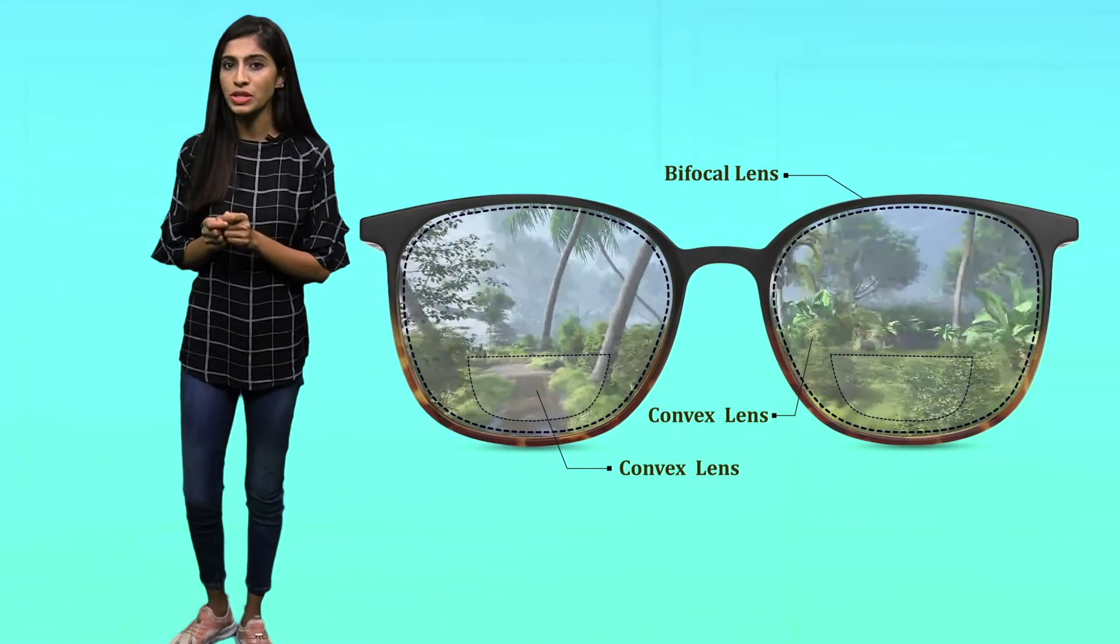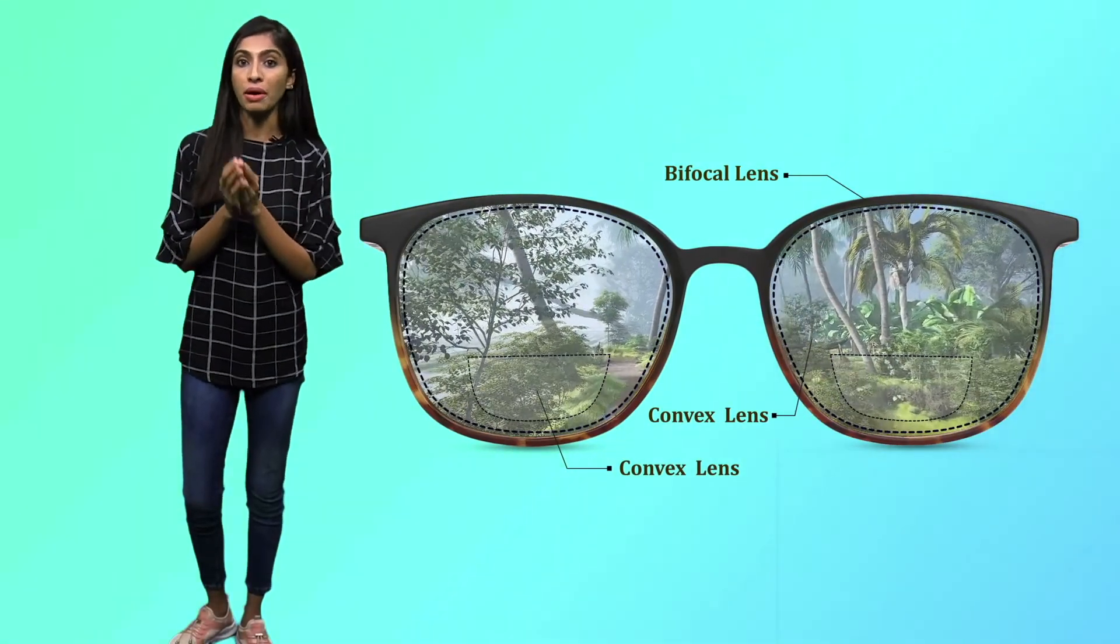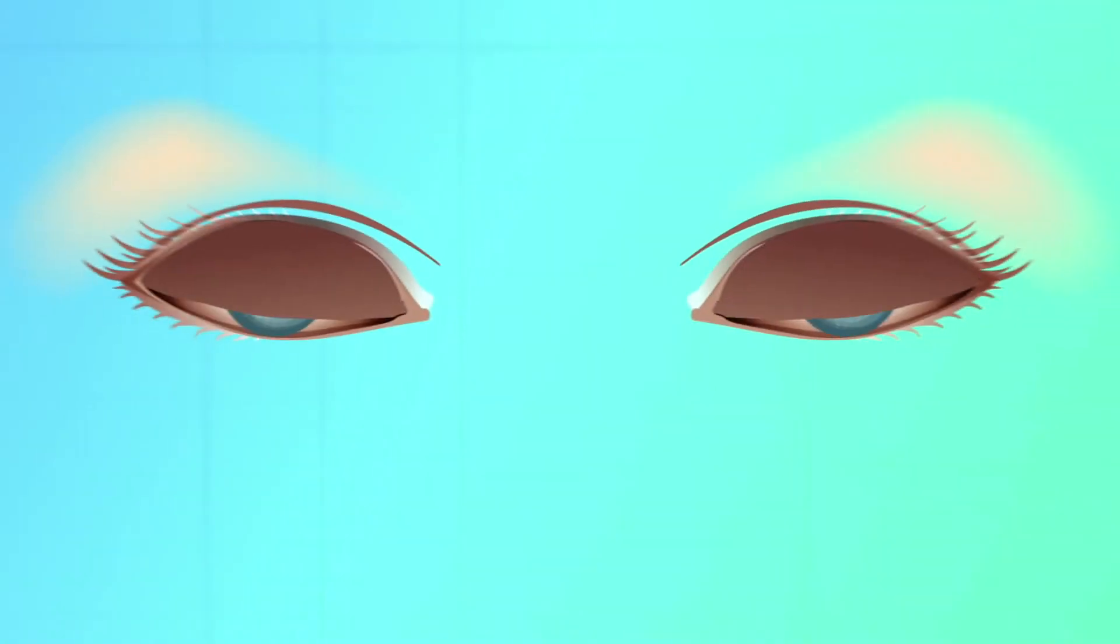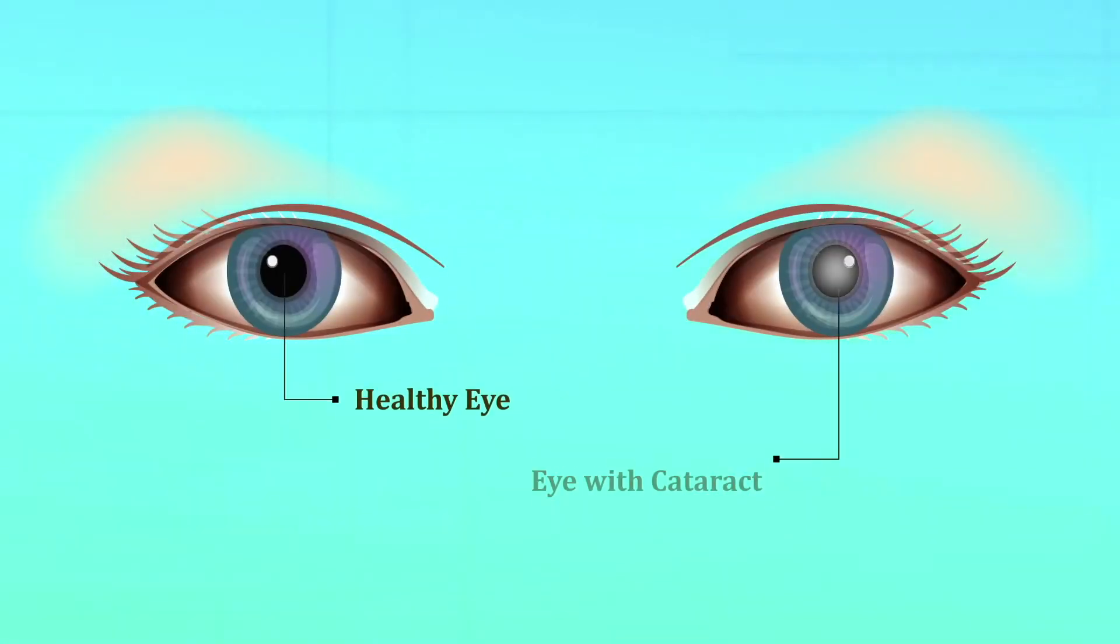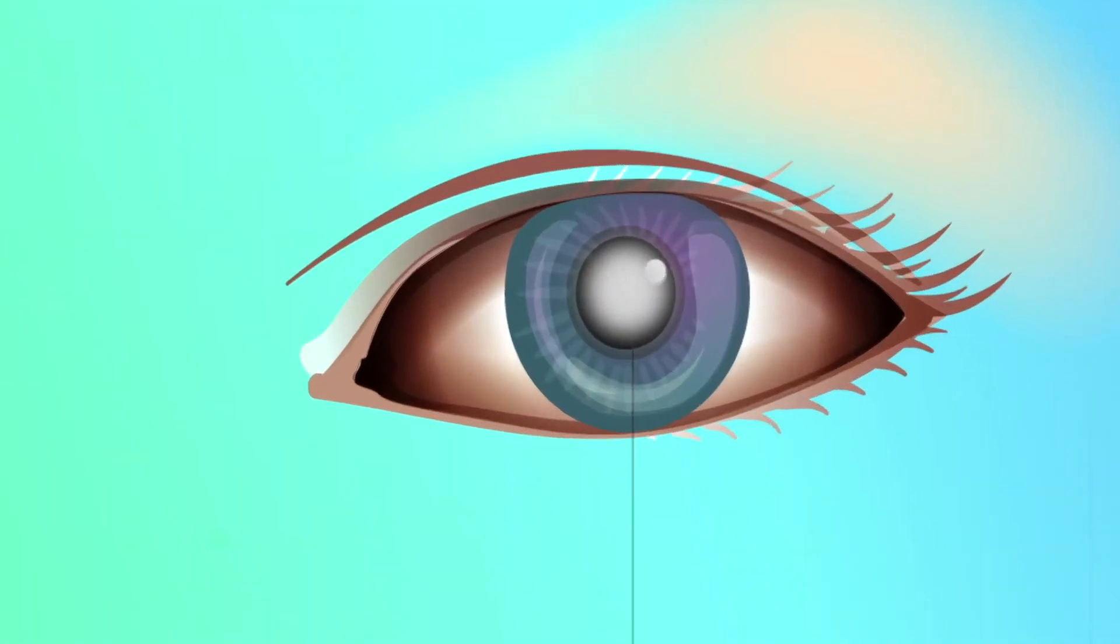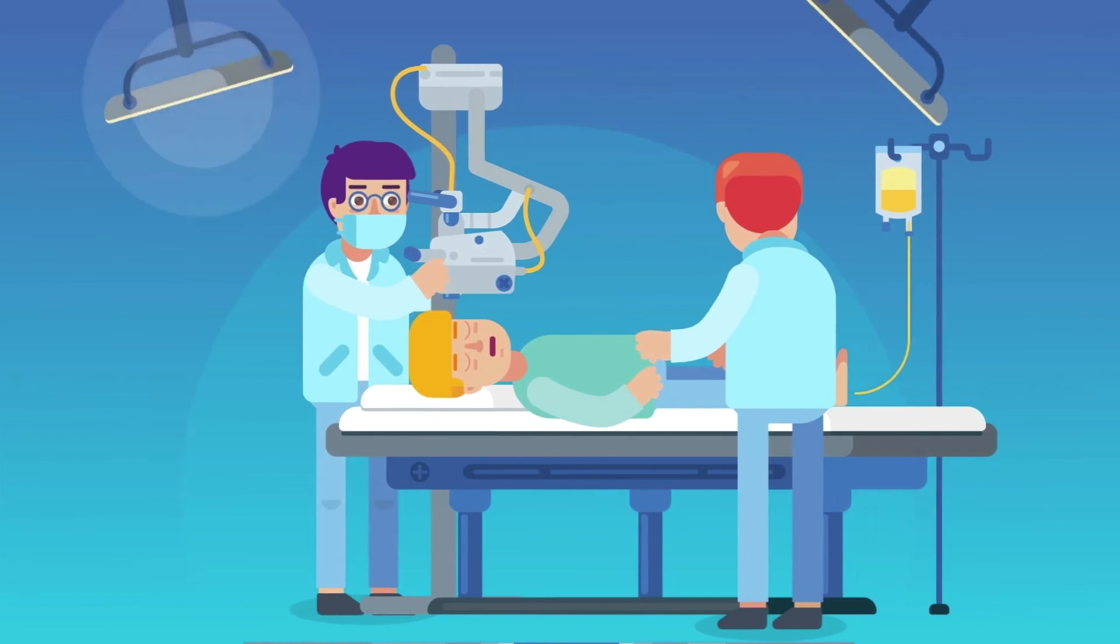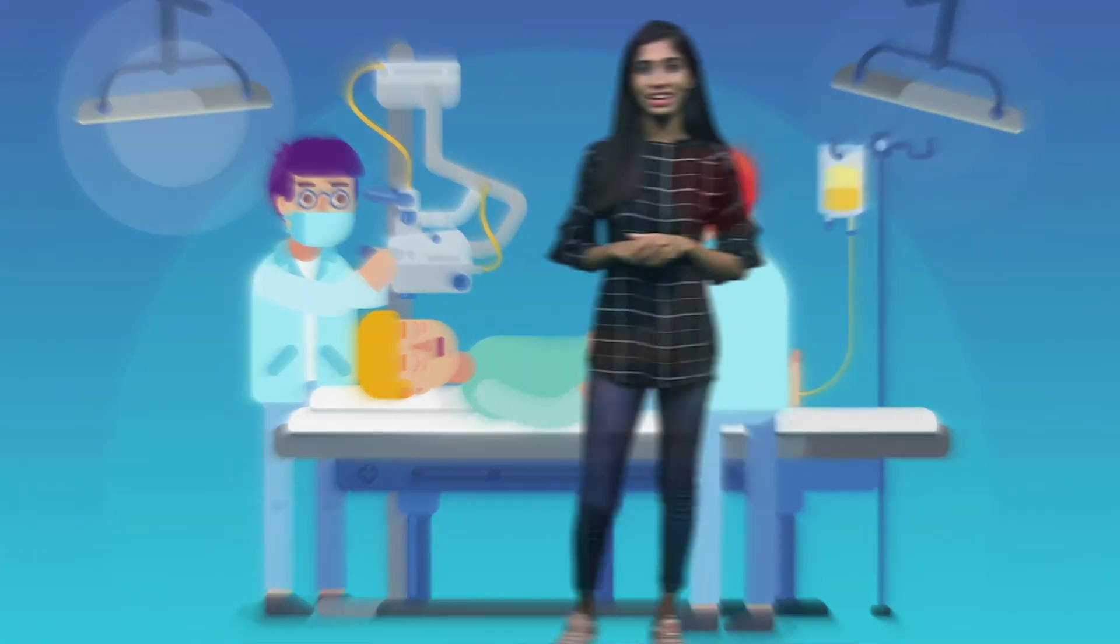There is another defect which is nowhere related to the power of accommodation. That is called the cataract. Cataract is the defect of the eyes when the lens which is crystalline become cloudy. Even this problem can be solved by a surgery called cataract surgery. This is all about our eyes. In the next class we are going to explore the colorful world and why it is looking so colorful to us. Thank you.